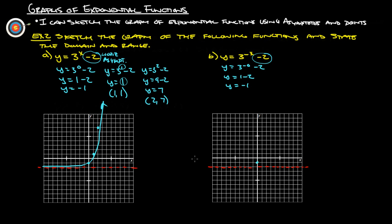The y-intercept is at negative one, which is the same as before. Now let's try x equals positive one. So y equals three to the negative one minus two. Three to the negative first is one over three, so that's one-third minus two, which gives us y equals negative one point six seven. So at x equals one, we're at negative one point six seven — it's going down.